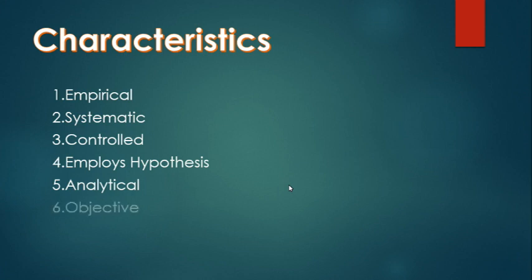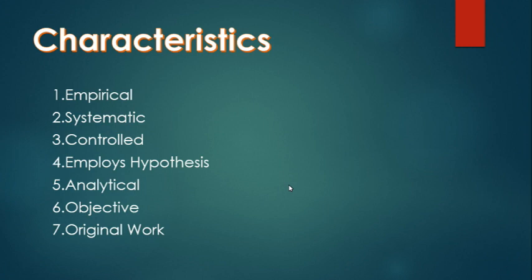Number six: Objectives. If you are doing research, you must have an objective and all the findings are logically based on empirical data, means based on a real-life situation. Number seven: Original. This characteristic is so important because you must have originality in order for you to be proud of your research.